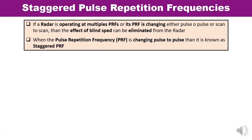If a radar is operating at multiple PRFs — pulse repetition frequencies — or its pulse repetition frequency is changing, either pulse to pulse or scan to scan, then the effect of blind speed can be eliminated.